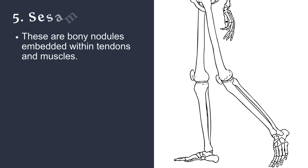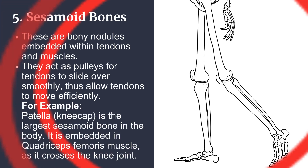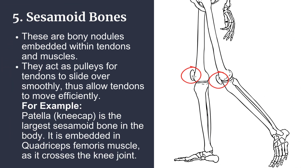Sesamoid bones are bony nodules embedded within tendons and muscles. They act as pulleys for tendons to slide over smoothly, thus allowing tendons to move efficiently. For example, the patella is the largest sesamoid bone in the body. It is embedded in the quadriceps femoris muscle as it crosses the knee joint.